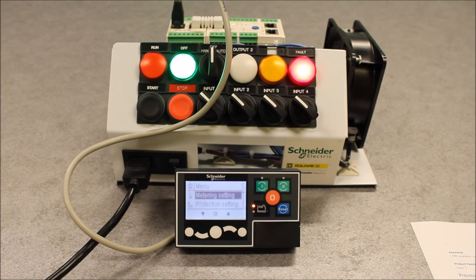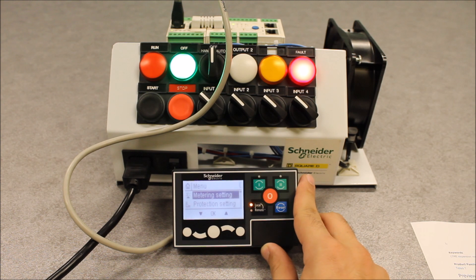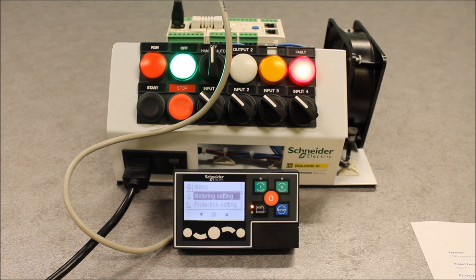In this video, we're going to talk about the compact display module to be used with the TCST controllers. The part number is LTMCU, and this is basically your typical display which you can use to display information, program settings, monitor faults, alarms, etc.